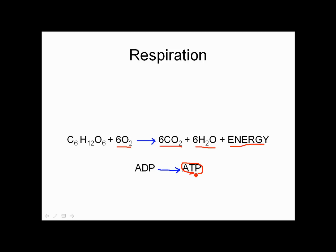ATP is life's energy currency. It's used in the most important life processes — it's a very critical molecule. It gets used up, turns back into ADP, and you need more energy to make it back into ATP. If you count all the carbon, hydrogen, and oxygen atoms on both sides of this equation, on each side of the arrow, you'll find they balance out. There are no elements that are used up and no elements that are added.